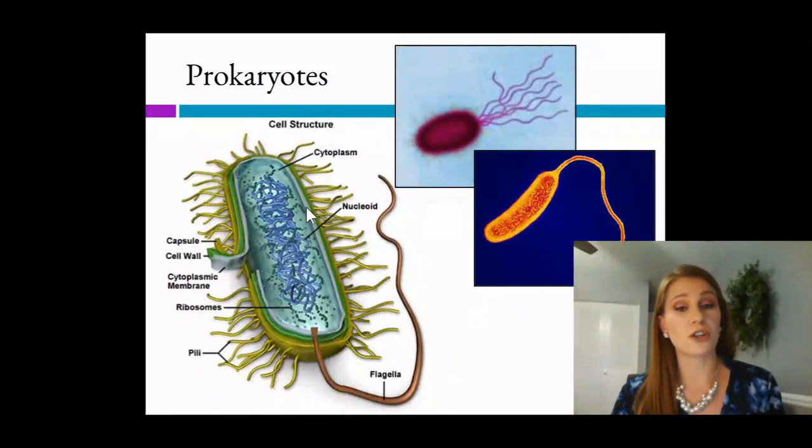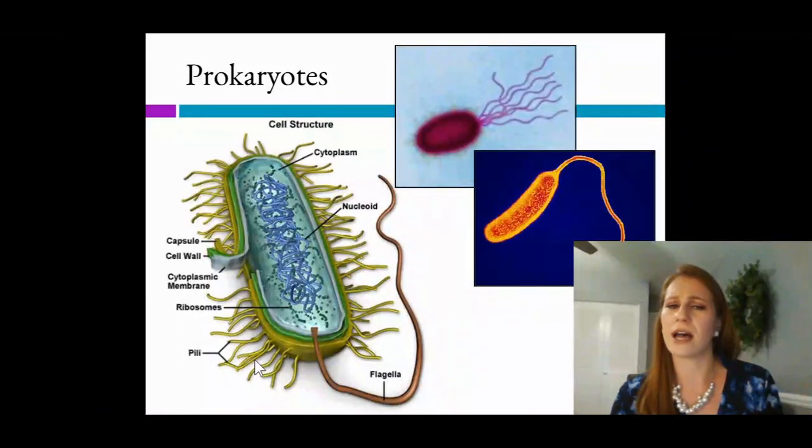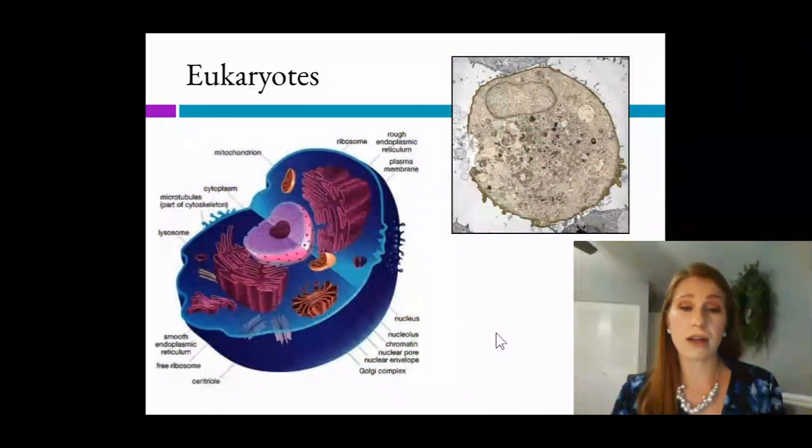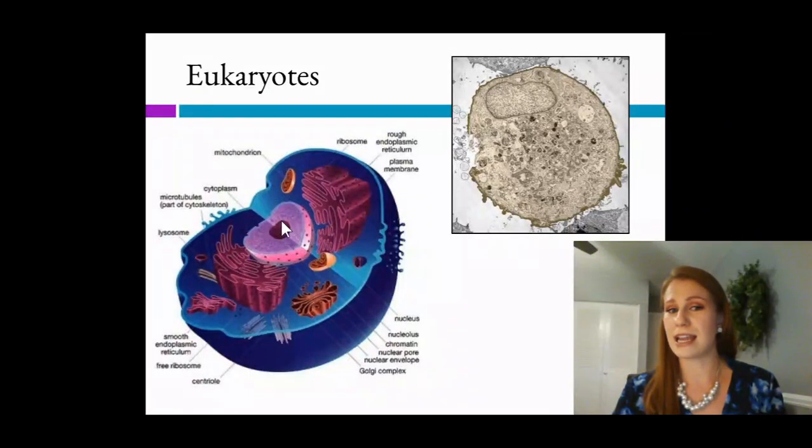Now remember prokaryotes and their structure, you see they have ways to move. This long flagella here helps them move, as well as the cilia, sometimes called pili, on the outside of the prokaryote. They've got several tough layers, including their cell membrane, cell wall, and capsule, and then they've got their DNA free-floating in this nucleoid region here in the center. Eukaryotes are more circular. They have all their membrane-bound organelles, as you can see. They have their nucleus and nucleolus containing their DNA in the very center of the cell here.